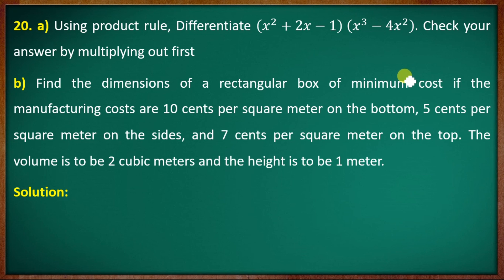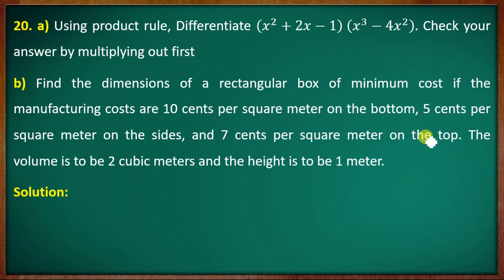The second question: find the dimensions of a rectangular box of minimum cost if the manufacturing costs are 10 cents per square meter on the bottom, 5 cents per square meter on the sides, and 7 cents per square meter on the top. The volume is to be 2 cubic meters and the height is to be 1 meter.